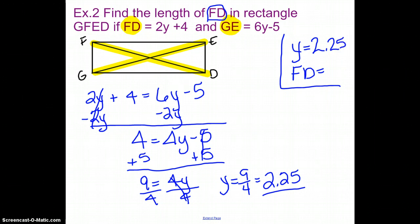Let me just change color here. Now, I have to find FD. FD is 2y plus 4. And I know that y is 2.25. So if I go to add this together, 2 times 2.25 is 4.5.